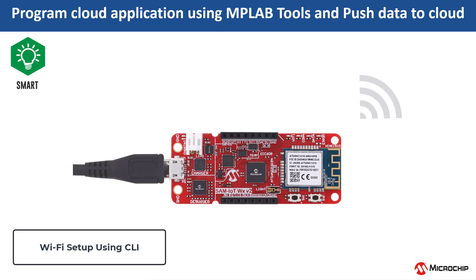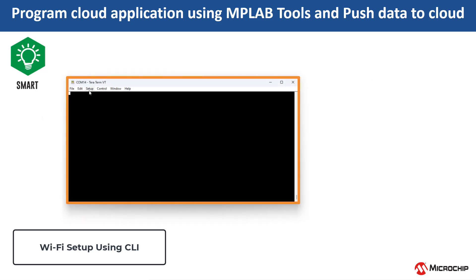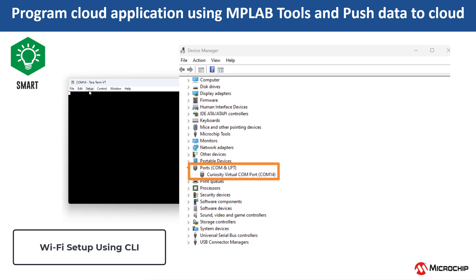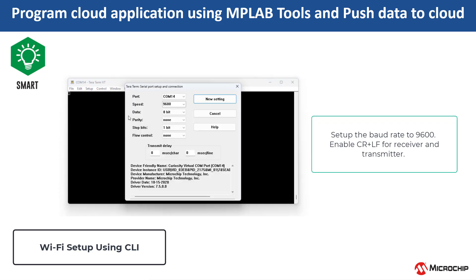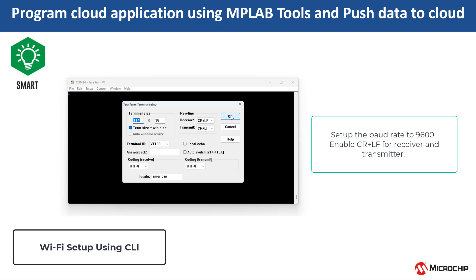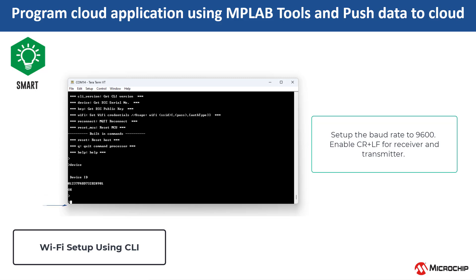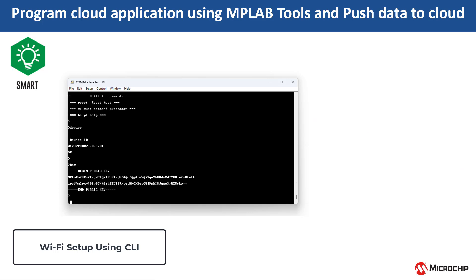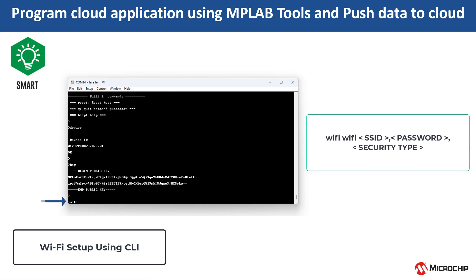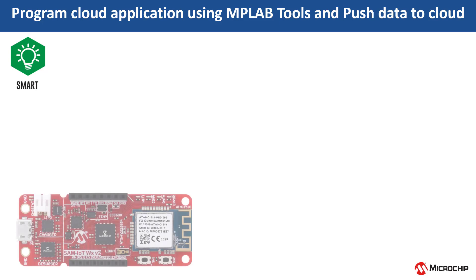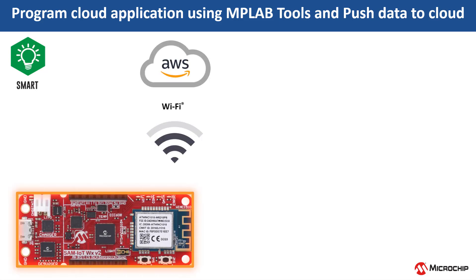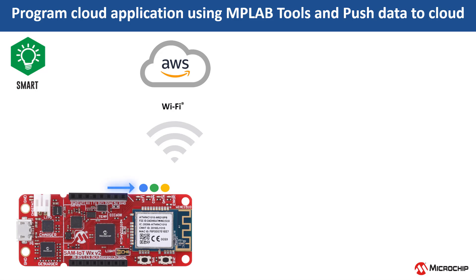Set up the Wi-Fi configuration through the command line interface. Open a terminal application on the host PC for the virtual COM port of the connected SAM IoT WA V2 development board with 9600, 8, none, 1 settings. Set the baud rate to 9600 and enable carriage return plus line feed for the receiver and transmitter. Type 'help' to display CLI commands. Enter 'device' to see the device serial number. Enter 'key' to get the pre-programmed ECC public key. Type your Wi-Fi credentials in the format: wifi, your SSID, your password, and the authentication type, then press Enter. If the Wi-Fi network is active, the SAM IoT WA V2 board establishes connectivity, sets the blue LED, and securely connects to the AWS IoT cloud and sets the green LED.